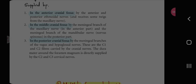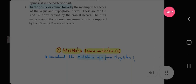These are the C1 and C2 fibers carried by the cranial nerves. The dura matter around the foramen magnum is directly supplied by C2 and C3 cervical nerves.